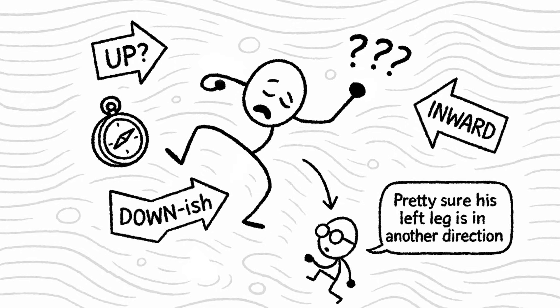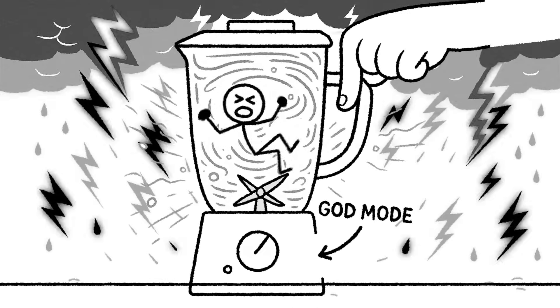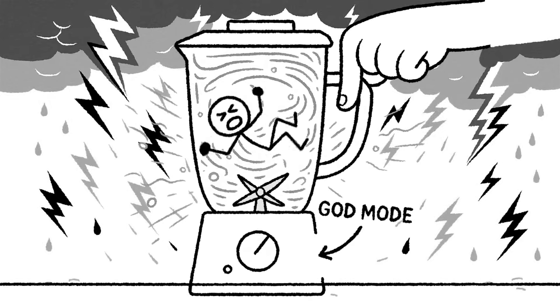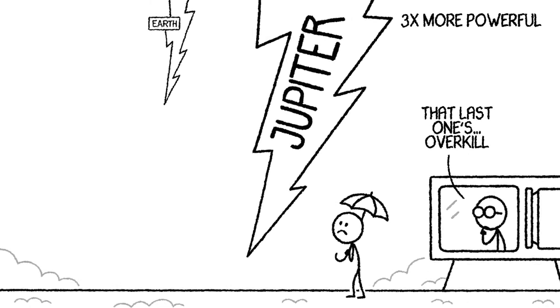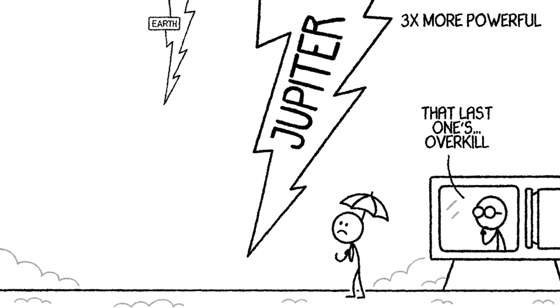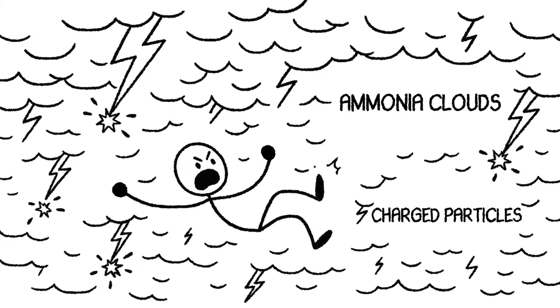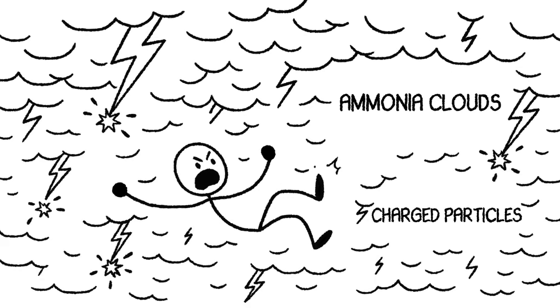But wait, it gets worse. Because this blender comes with lightning. And not the polite, flickery kind you see during a summer storm. No, Jupiter's lightning bolts are up to three times more powerful than anything we have ever recorded here on Earth. Some of these discharges are strong enough to vaporize entire spacecraft components. They shoot through storms that stretch 50 kilometers deep, layered with thick ammonia clouds and charged particles just waiting to explode. It's not just flashes of light, it's bursts of raw, electrified destruction.